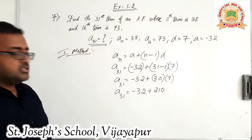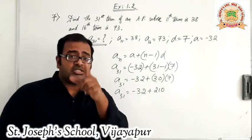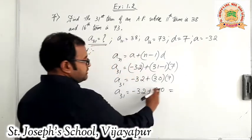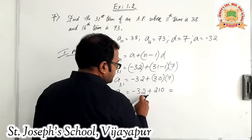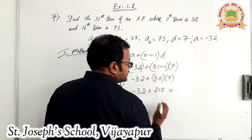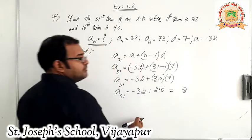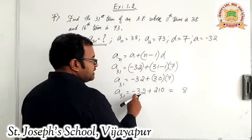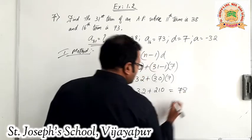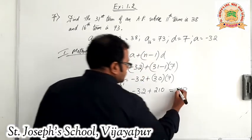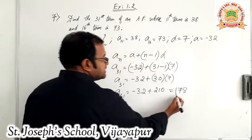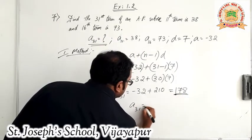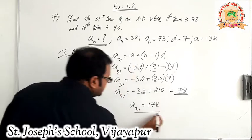210 minus 32: 0 minus 2, borrow — 10 minus 2 is 8; carry forward — 10 minus 3 is 7; one remains — giving 178. The bigger number's sign is positive, so A31 is equal to 178. That is method 1.